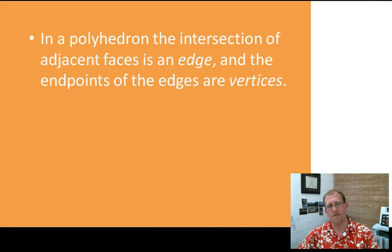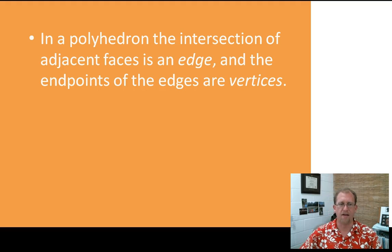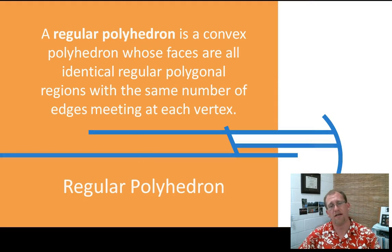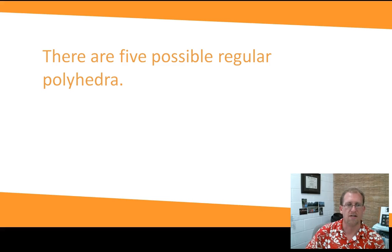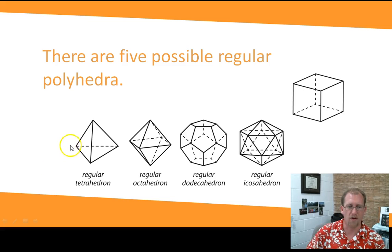In a polyhedron, the intersection of adjacent faces is an edge, just like in a pyramid, and the end points of the edges are vertices, just like in a pyramid. So pyramids and polyhedrons have a lot of the same terminology. We're still talking about edges and points are vertices. A regular polyhedron is a convex polyhedron whose faces are all identical regular polygons with the same number of edges meeting at each vertex. A regular tetrahedron has four equilateral triangles. A regular octahedron has eight equilateral triangles. A regular dodecahedron has twelve regular pentagons. A regular icosahedron has twenty regular equilateral triangles. And a cube or regular hexahedron has six regular squares.